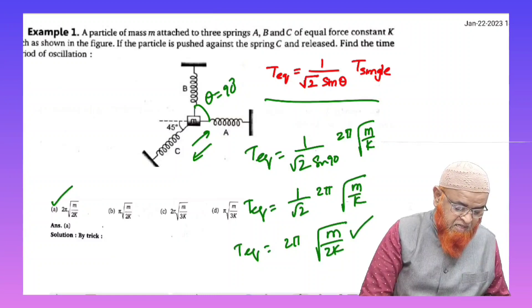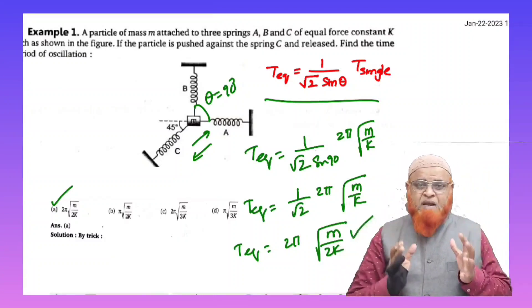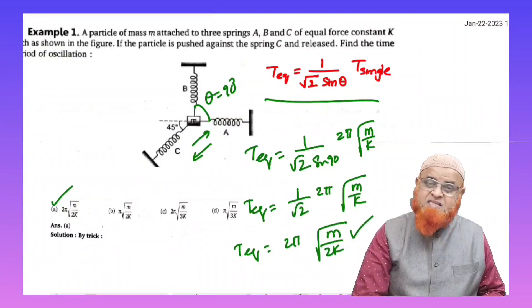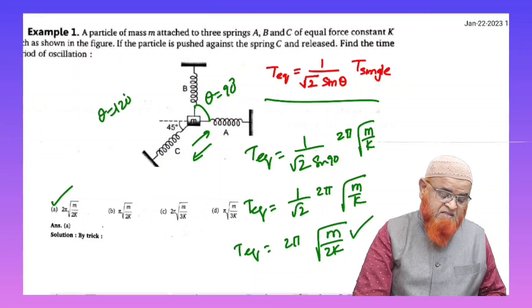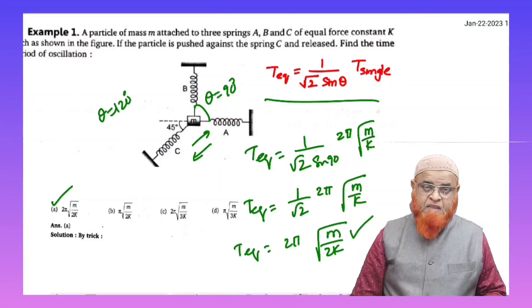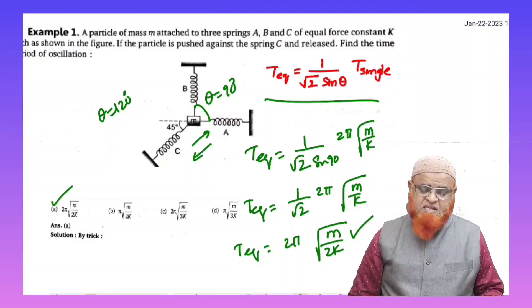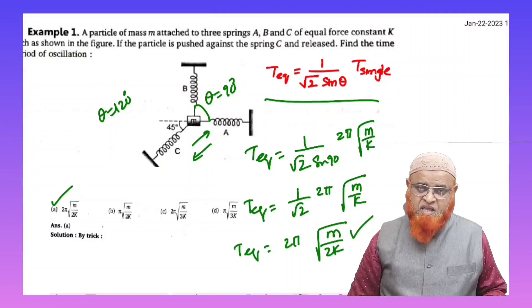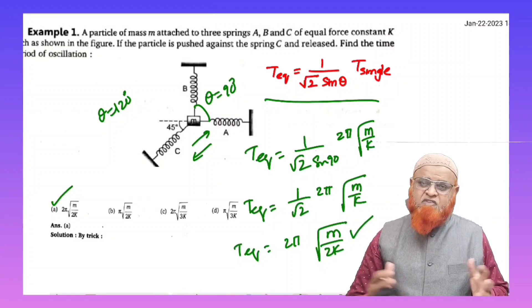So the first option is going to be your answer. For example, instead of 90 degrees, the two springs are having certain angle theta which is going to be 120 degrees. If it is 120 degrees, then you can just write sine 120 here, and you'll get the different answer.